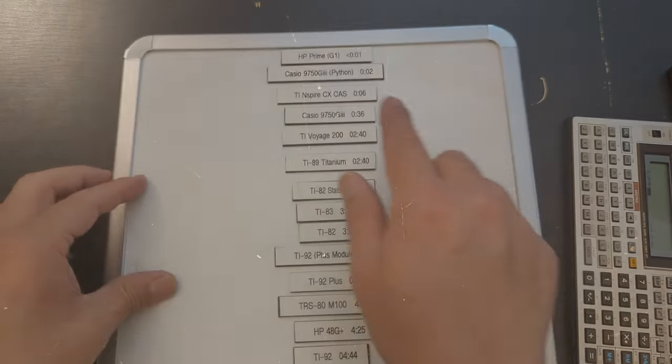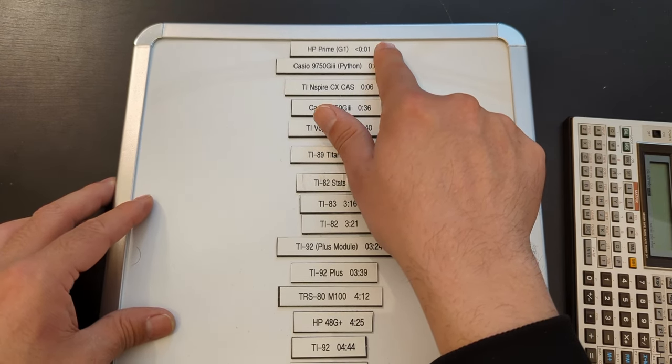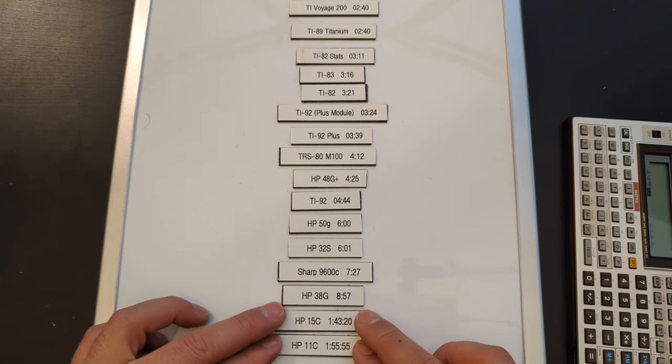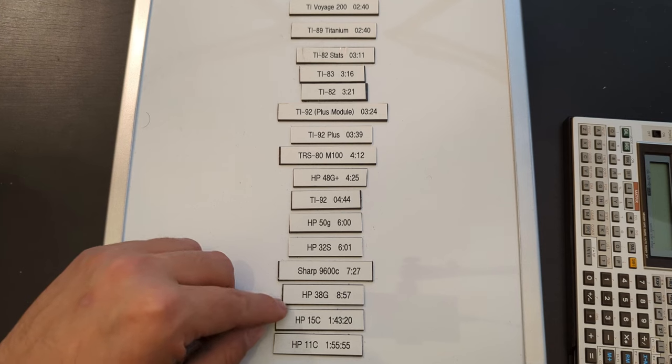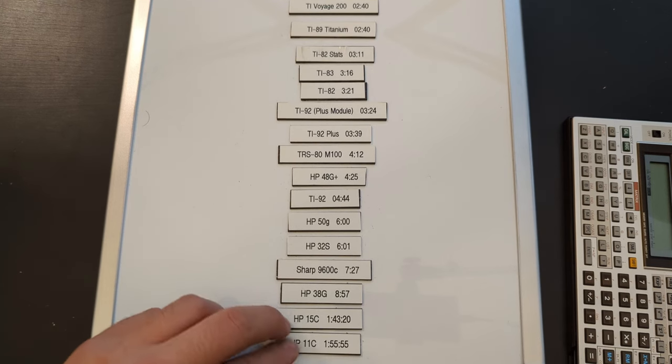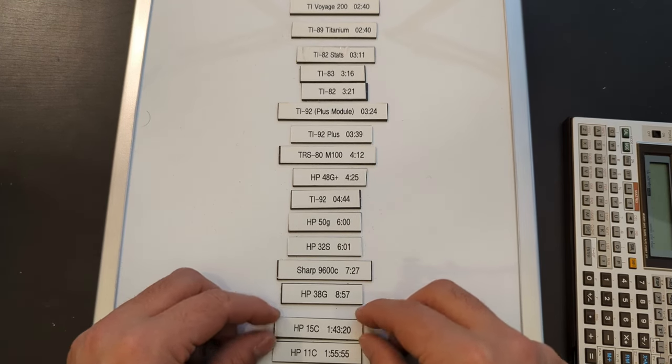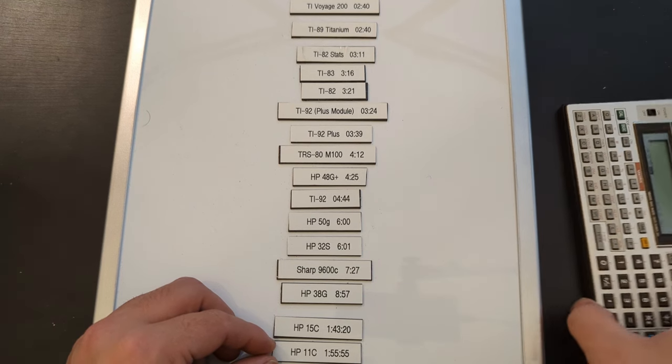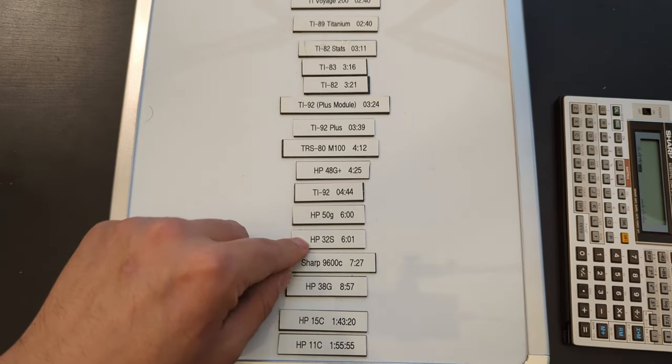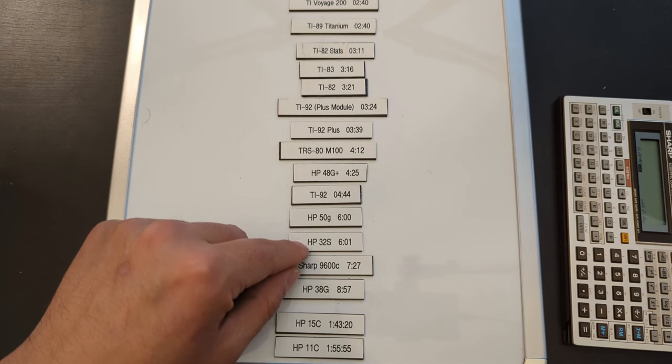Let's take a look at the board. Yeah so up at the top we of course have the g1 Prime which is not even a second. And then down here at the bottom we have the two HP voyagers the 15 and the 11 which took nearly two hours. And then right from there we jump up so I don't really have anything in the late 80s era that was programmable anyway. So these two are 1981 scientific calculators, this is a 1986, I think this is like early 90s, this is late 80s. I think it's like an 88 or an 89, the 32s.